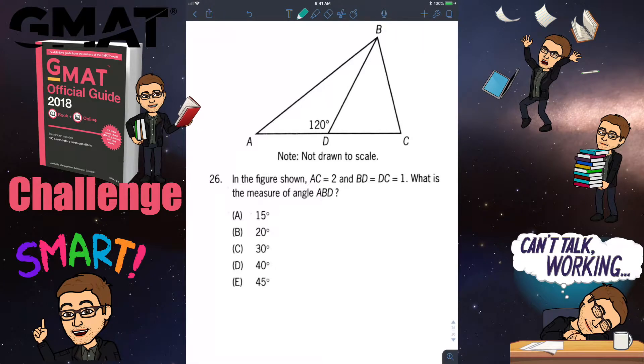GMAT challenge number 26. In the figure shown, AC is 2 and BD and DC is 1. What is the measure of angle ABD? Feel free to pause this video and attempt the problem on your own. Now let's review my solution to this problem.